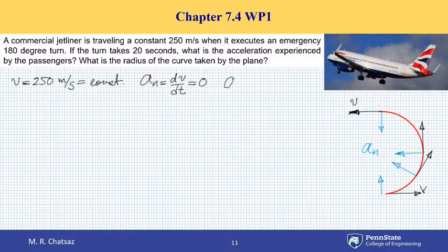And recall that for the normal component of acceleration, we have V squared over rho, rho being radius of curvature, V being speed, or alternatively, I can write V theta dot.